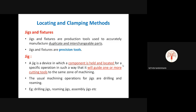Even after doing manufacturing processes like casting or forging, we have to do some machining operations. Machining means the removal of unwanted material. By machining, the surfaces of these products may be finished by removal of this unwanted metal.